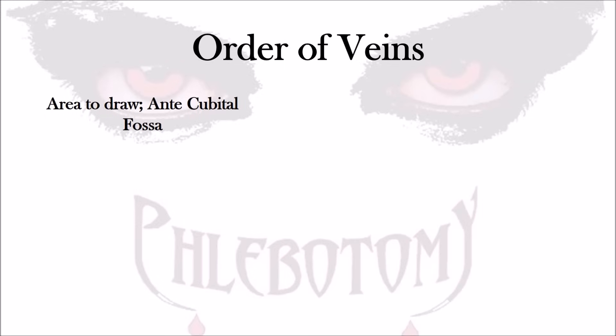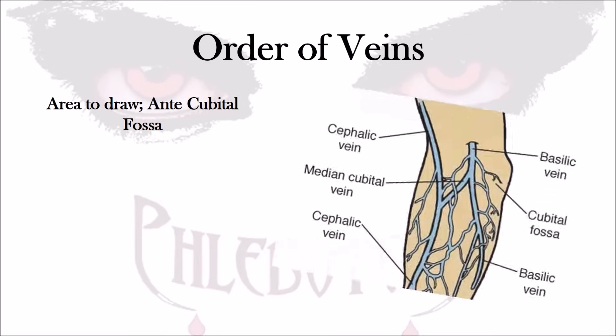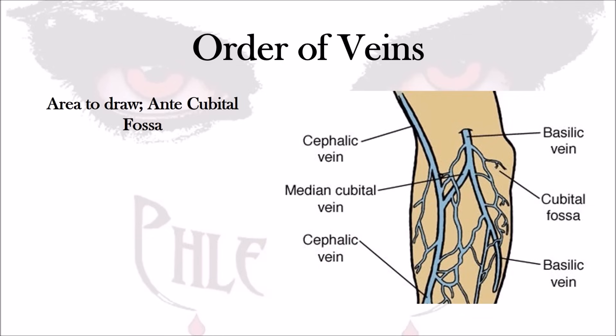When we're looking at the area to draw, we must remember that this area is called the antecubital fossa area. This area is where all three veins lie — the median cubital, the cephalic, and the basilic veins.